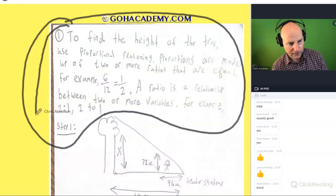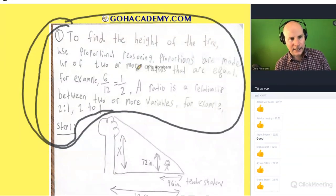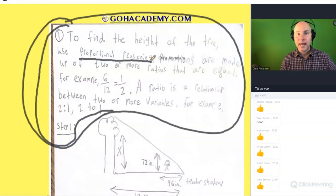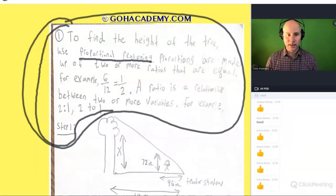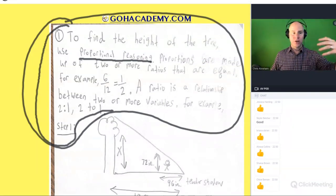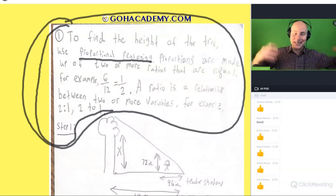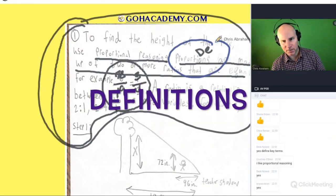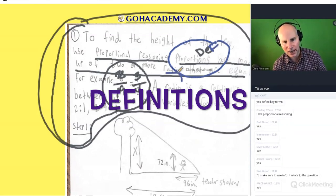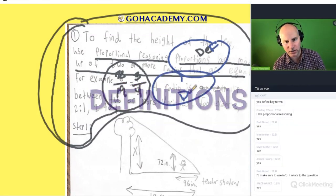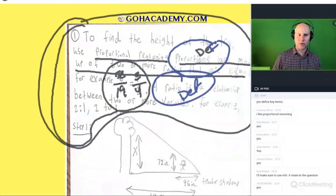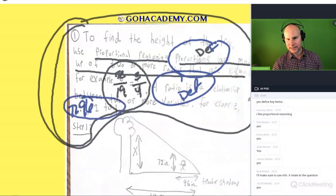I like this opening a lot. I like how he introduced this idea of using proportional reasoning, and that was in the question. Derek has a nice definition of proportions here and also has a definition of a ratio. He's got two pieces of vocabulary right up front.